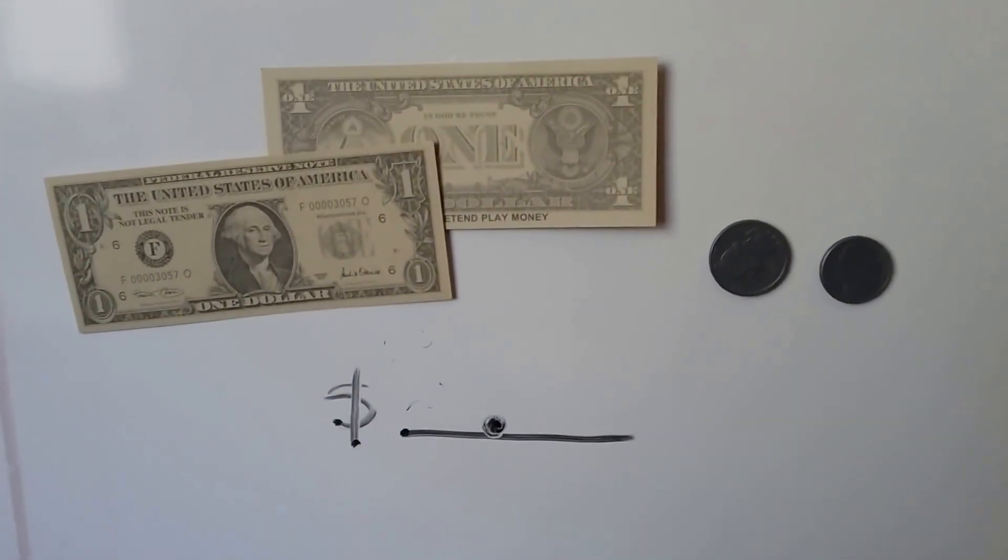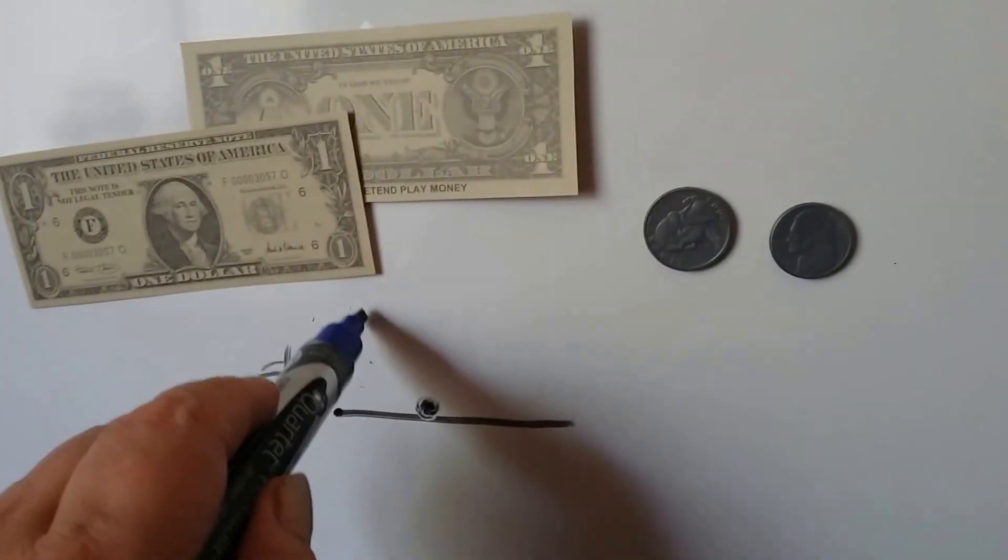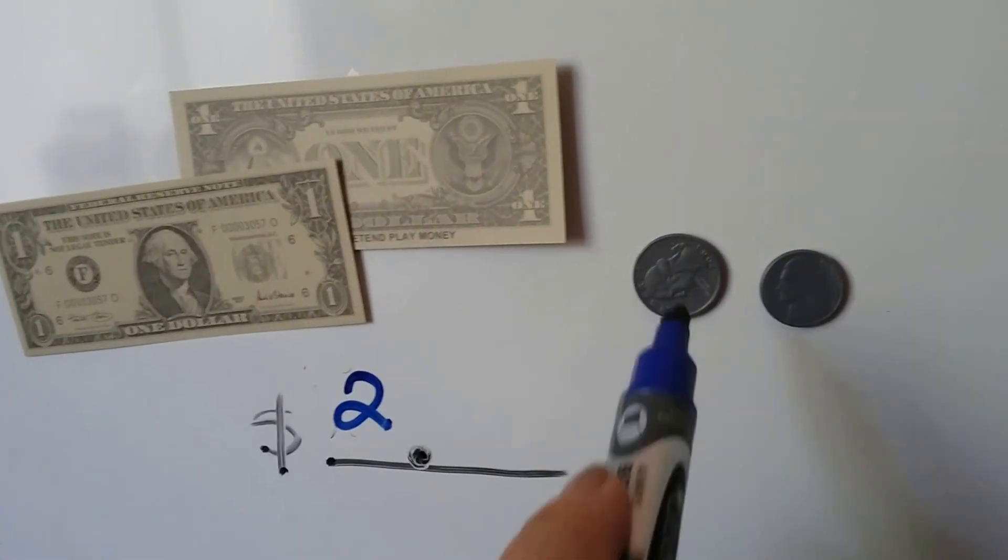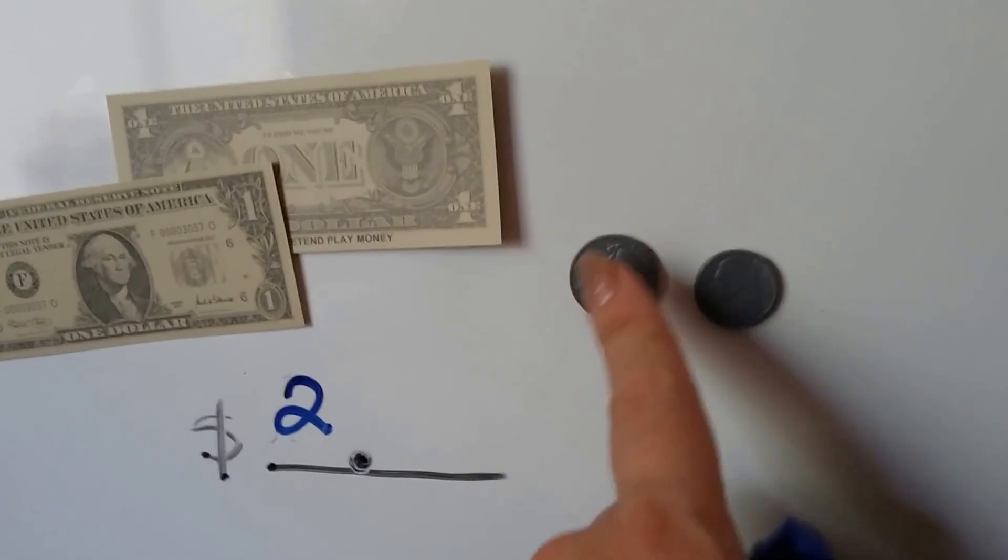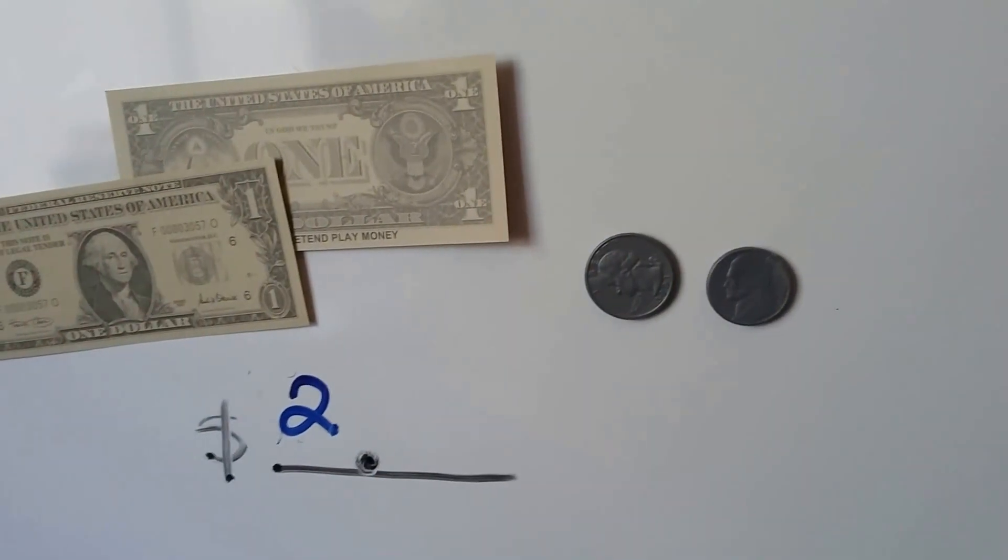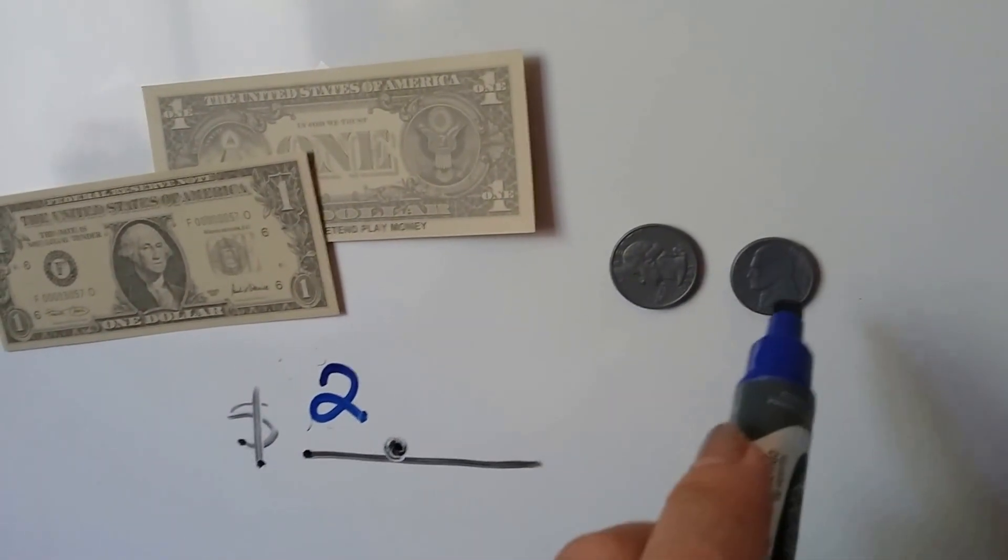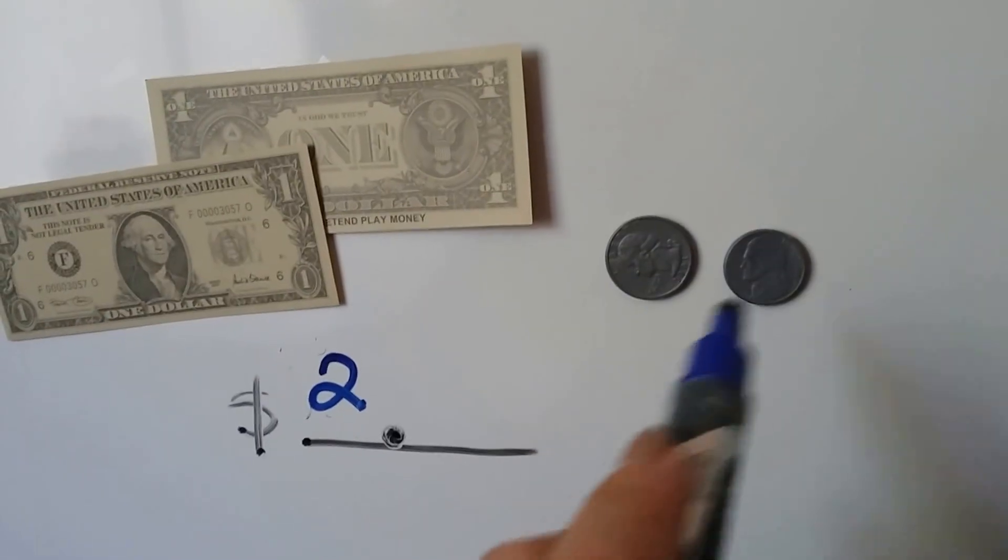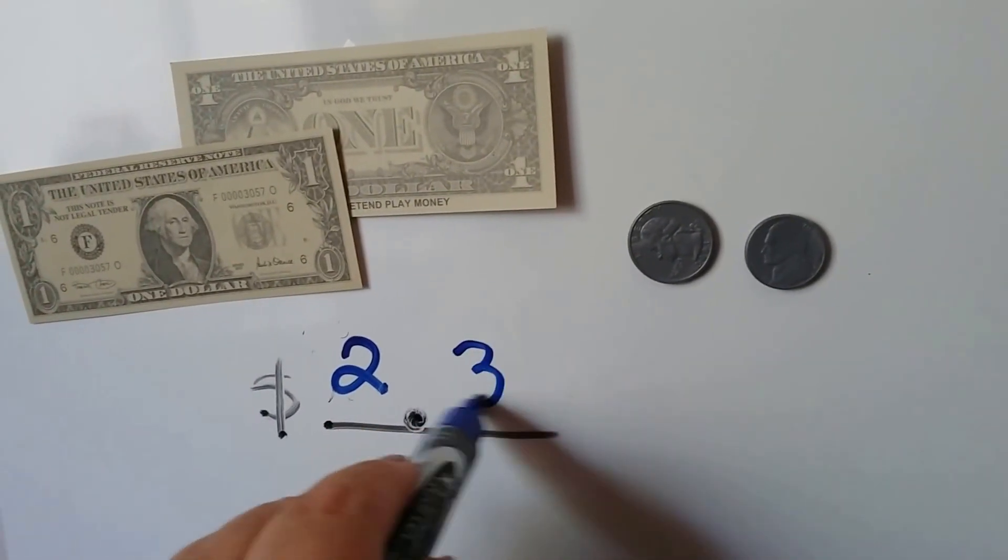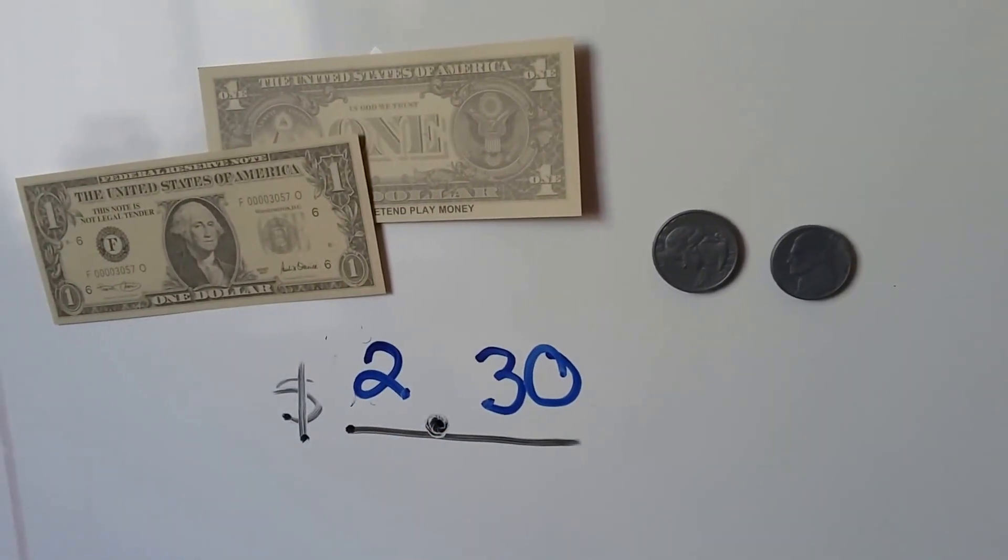Let's try this one. How many dollars do we see? I see 2 dollars. And how much money is here? We have a quarter and we have a nickel. That's 25 and 5. That's 30. So we have 2 dollars and 30 cents.